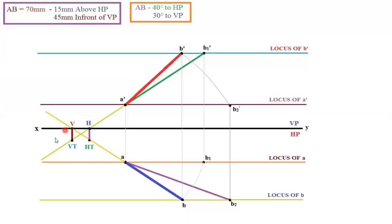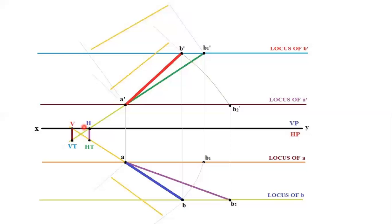After drawing the traces, remove any unwanted construction lines so the diagram looks neat. It's a very easy diagram — just follow it step by step. I have drawn it using paint. When you draw with exact dimensions, you will get the exact solution. Now we will see how to dimension. For dimensioning, draw extension lines that are very light and perpendicular to whatever line you are dimensioning. For example, if you are dimensioning A dash B dash, the extension line should be perpendicular to A dash B dash.